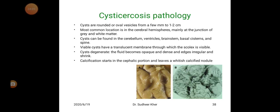Viable cysts have a translucent membrane through which the scolex is visible. As cysts degenerate, the fluid becomes opaque and dense, edges become irregular and shrink. Calcification starts in the cephalic portion and leaves whitish calcified nodules, which are visualized on CT, showing the location of cysts in the brain and ophthalmic regions.